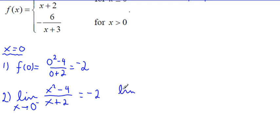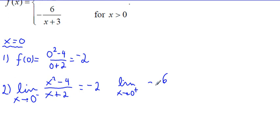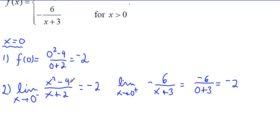Now I need the limit as x approaches zero from the right side. For the right side, I use the piece for x greater than zero: negative six over x plus three. Plugging in zero gives negative six over zero plus three, which is negative six divided by three, equals negative two. So my one-sided limits are the same — that's a good thing. That means the limit as x approaches zero of f of x equals negative two.